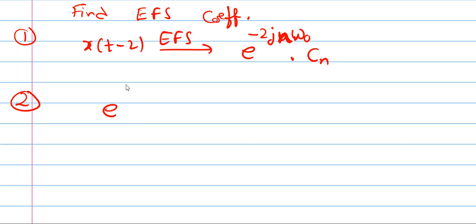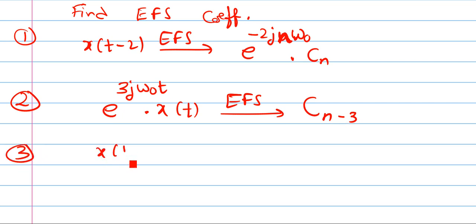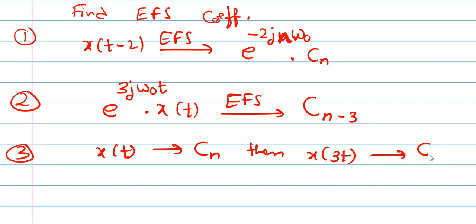Second example: e raised to the power of 3j-omega-0-t times X of t. The signal is multiplied by an exponential, so in the other domain we have a shift. By frequency shift property, opposite signs apply — factor is plus 3 here, so minus 3 there, giving C of n minus 3. Third: if X of t has Fourier series coefficient Cn, then X of 3t also has coefficient Cn — it does not change.